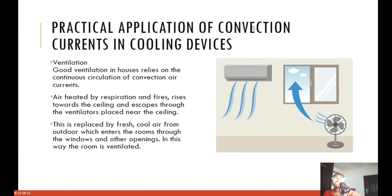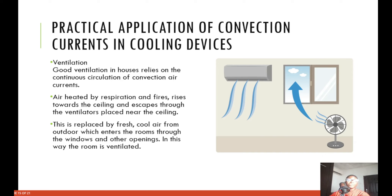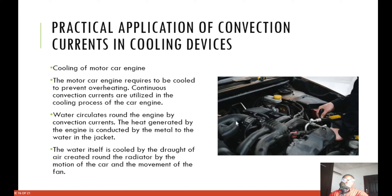Practical applications of convection currents — ventilation: good ventilation in houses relies on the continuous circulation of convection air currents. Air heated by respiration and fires rises towards the ceiling and escapes through ventilators placed near the ceiling. This is replaced by fresh cool air from outdoors, which enters the room through windows and other openings. In this way, the room is ventilated.